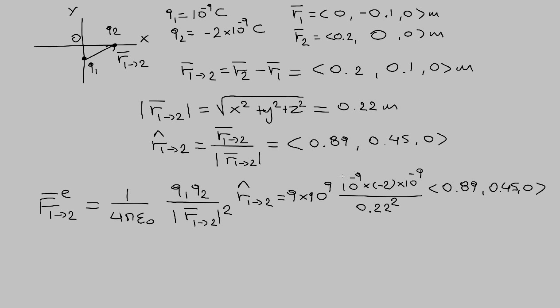This is everything we need to calculate the electric force. My suggestion is when you have this kind of calculation, first do the scalar calculation — all of these quantities are numbers — and then multiply the result by each component of the R-hat vector. If you do the calculation, you will find that the electric force from charge 1 on charge 2 is (−3.22 × 10⁻⁷, −1.61 × 10⁻⁷, 0) newtons.